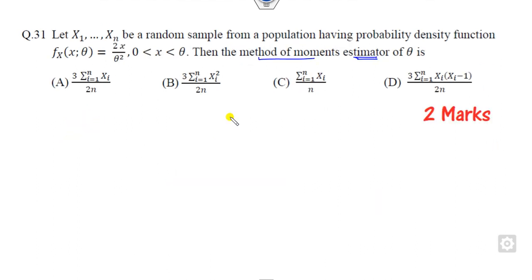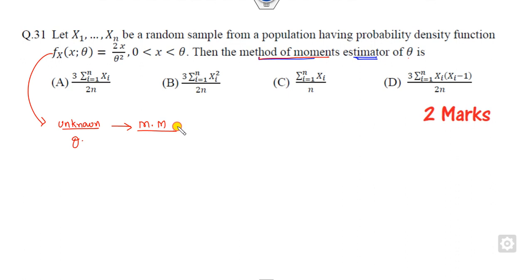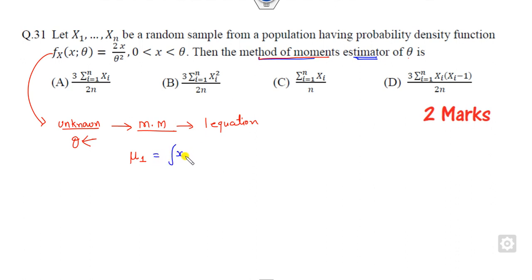Now look at question 31. You have to find the estimator using the method of moments. How many unknown parameters does this PDF have? Only one, that is theta. It means the method of moments will need only one equation. So you have to find mu_1, the first moment. Since there is only one unknown parameter, we need only the first moment. The first moment is the integral of x times f(x) dx, with limits from 0 to theta.